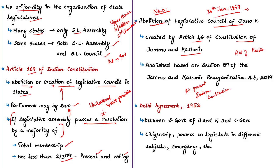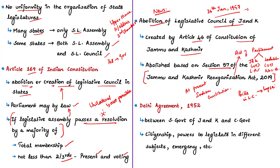The two union territories are: the union territory of Jammu and Kashmir with a legislative assembly, and the union territory of Ladakh without a legislative assembly. This act is called the Jammu and Kashmir Reorganization Act of 2019. Section 57 of this act contains provisions to abolish the legislative council of J&K. As a result, all bills pending in the legislative council shall lapse upon abolition. In the true spirit of Article 169, this abolition is questionable in court since no resolution was passed by the state legislative assembly.